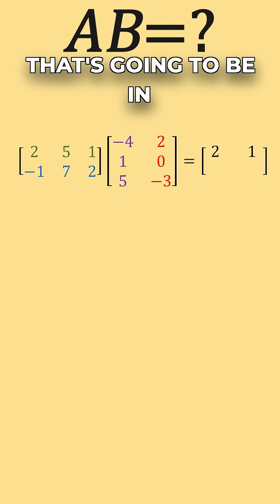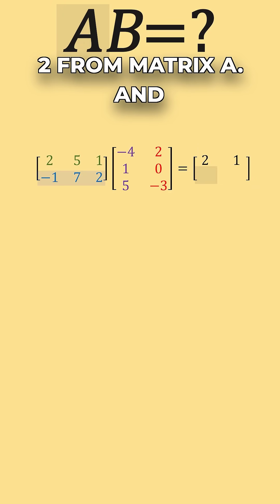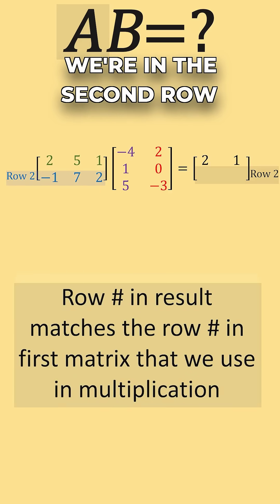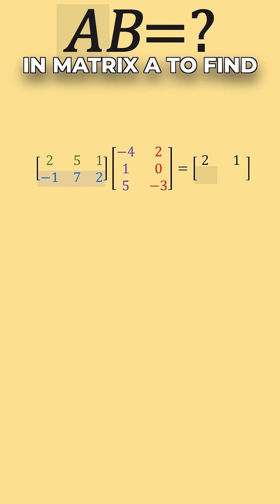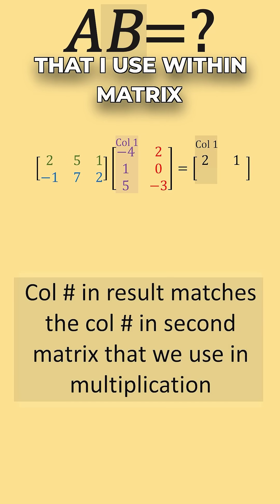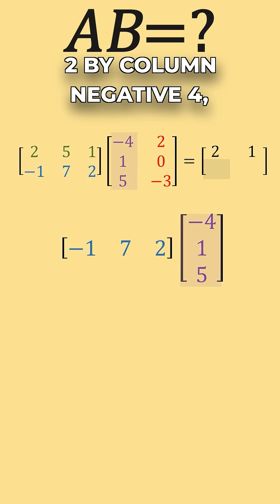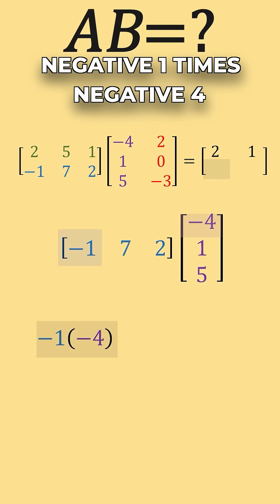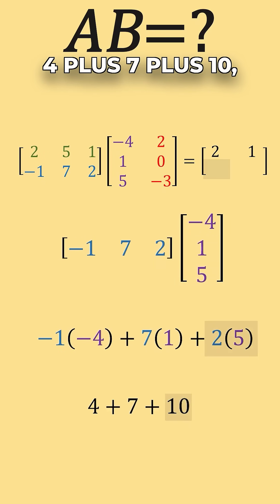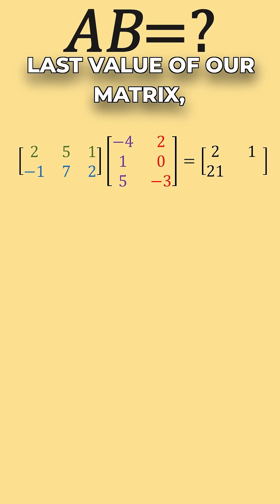To find the value in the second row, first column of our result, we use row 2 from matrix A. The row number in the result tells us which row to use in matrix A, and likewise the column in the result tells us which column to use in matrix B. We multiply row negative 1, 7, 2 by column negative 4, 1, 5. This gives us negative 1 times negative 4 plus 7 times 1 plus 2 times 5, which equals 4 plus 7 plus 10, which equals 21. So 21 goes in row 2, column 1 of our result.